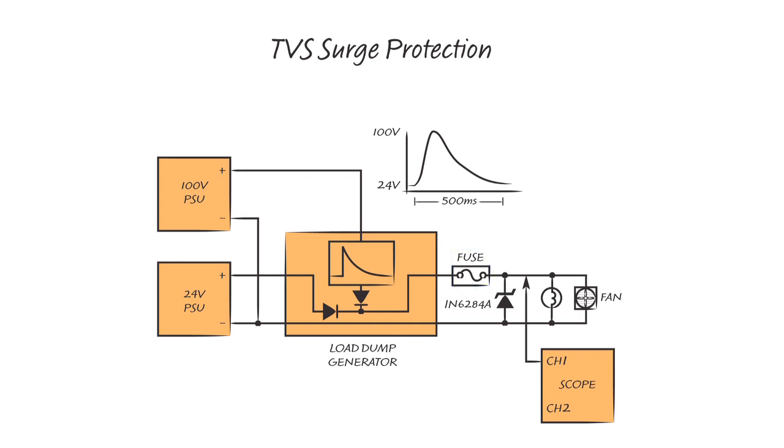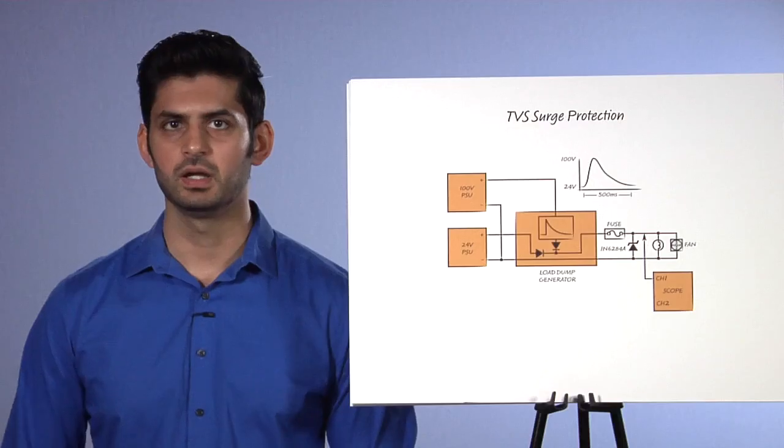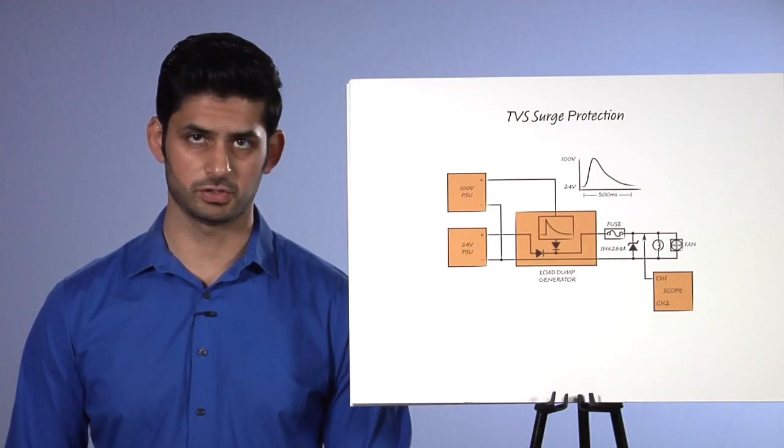I will apply a 100 volt load dump pulse, which is a 3 to 500 millisecond pulse with the use of a load dump generator with a 2 ohm source impedance. And we will observe how the TVS protects the downstream circuitry by looking at the input voltage with the aid of a scope. Make sure you have proper protection before turning power on.